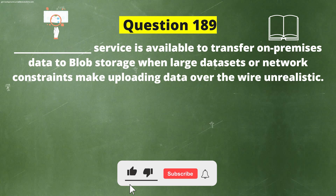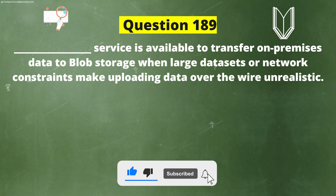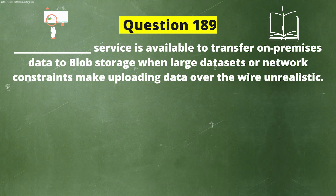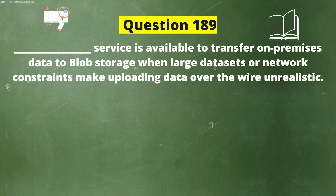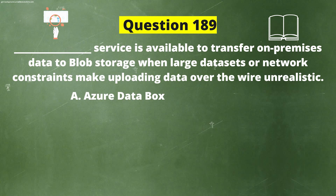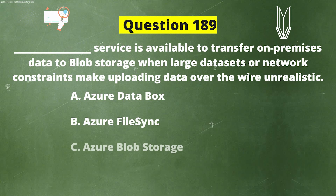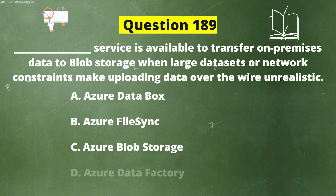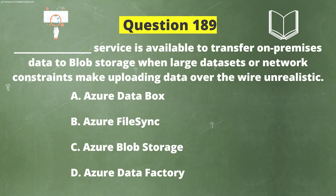Next question: Dash service is available to transfer on-premises data to Blob Storage when large data sets or network constraints make uploading data over the wire unrealistic. The options are: A) Azure Data Box, B) Azure File Sync, C) Azure Blob Storage, D) Azure Data Factory. The correct answer is option A: Azure Data Box.